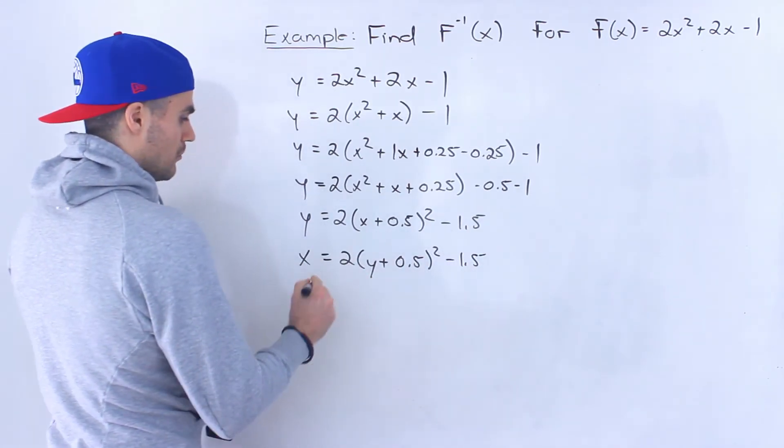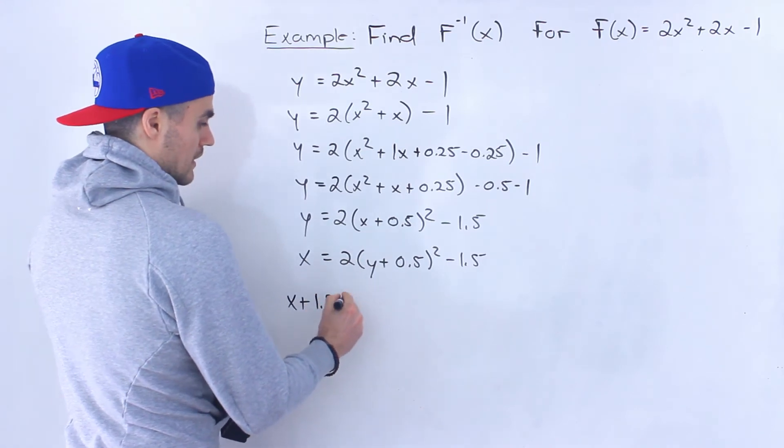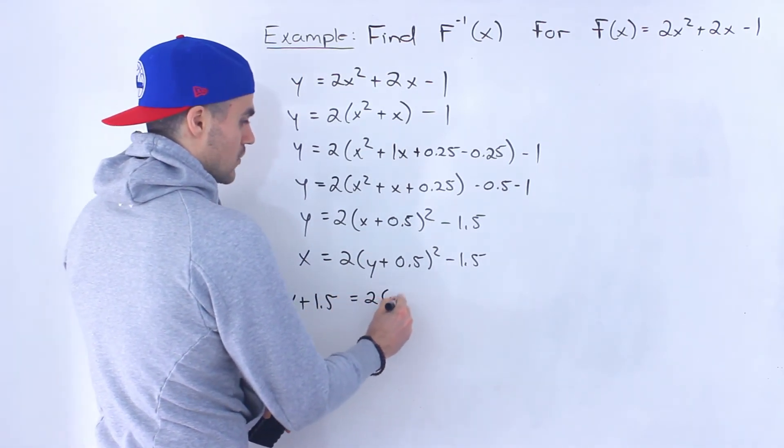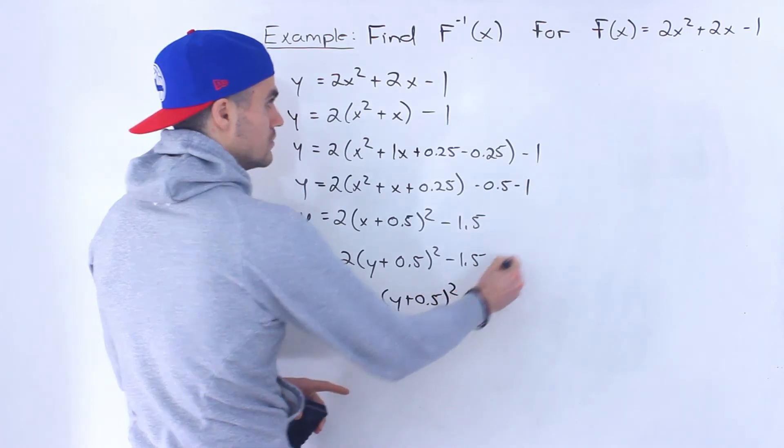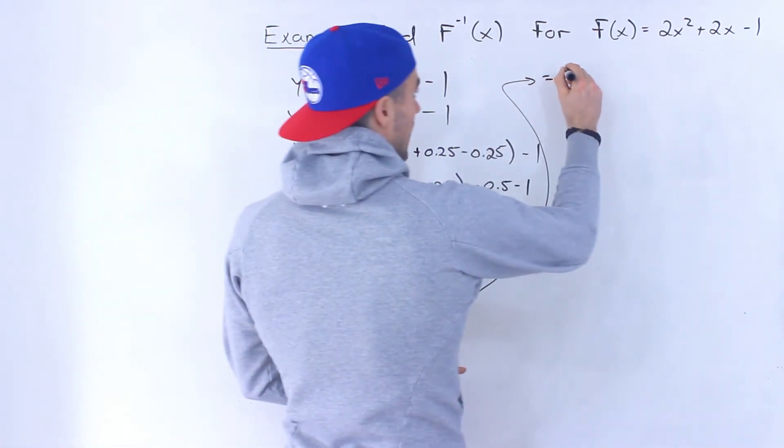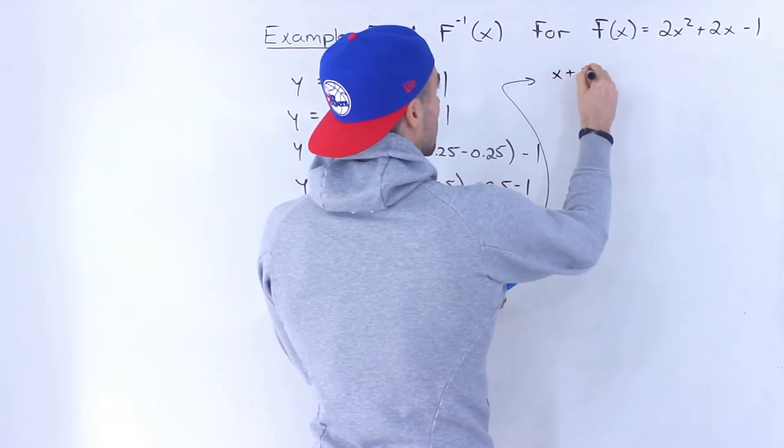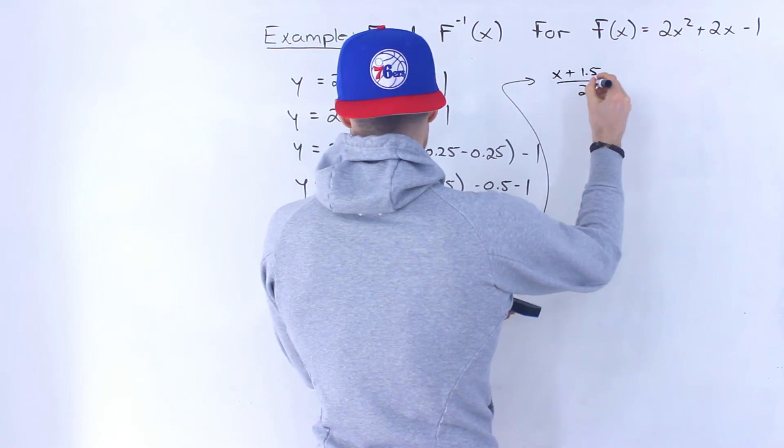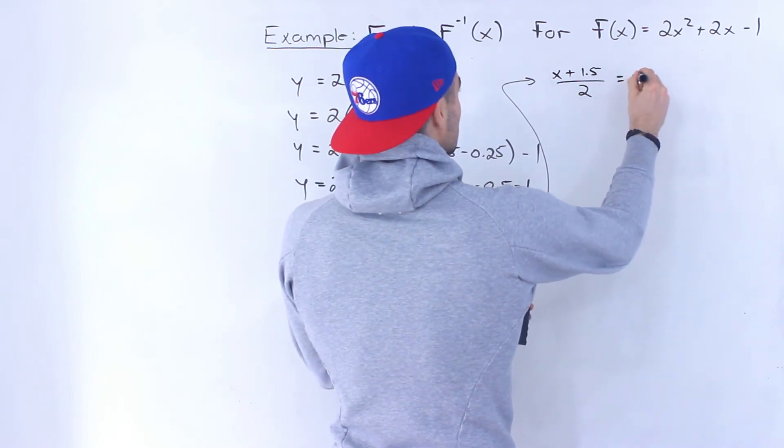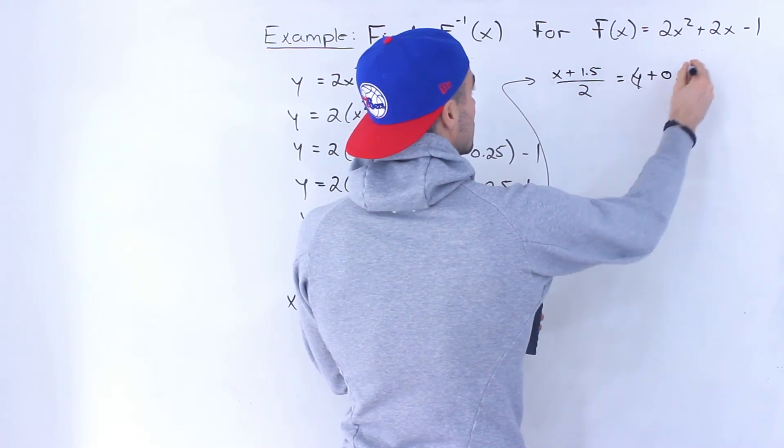So we would bring the 1.5 over. So we'd have x plus 1.5 equals 2 times y plus 0.5 to the power of 2. Divide both sides by 2. So we'd have x plus 1.5 over 2 equals y plus 0.5 squared.